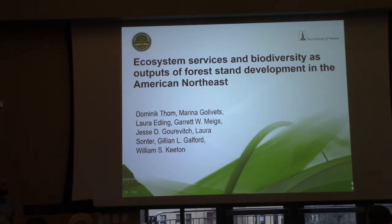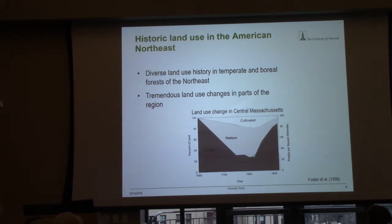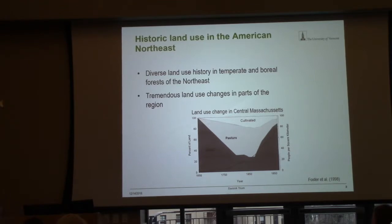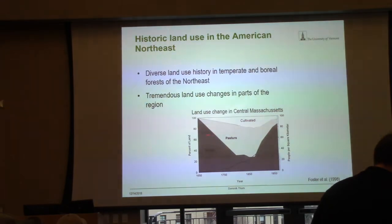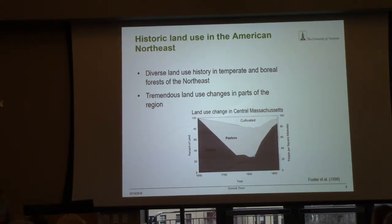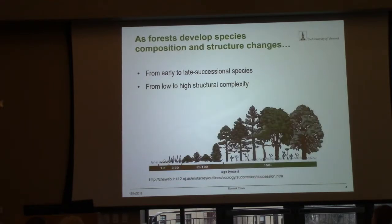But before I talk about the future, I better start with the past. As most people here are probably familiar with, there has been a lot of changes in land use in Eastern North America. For example, from central Massachusetts, the forest has declined a lot since 1650 and been converted to pasture and cultivated. But since around 1850 to 1900, forests are recovering largely in this area again. So that also means that forests are aging in many parts of this region, and as forests are aging, they're also changing in their composition and structure.